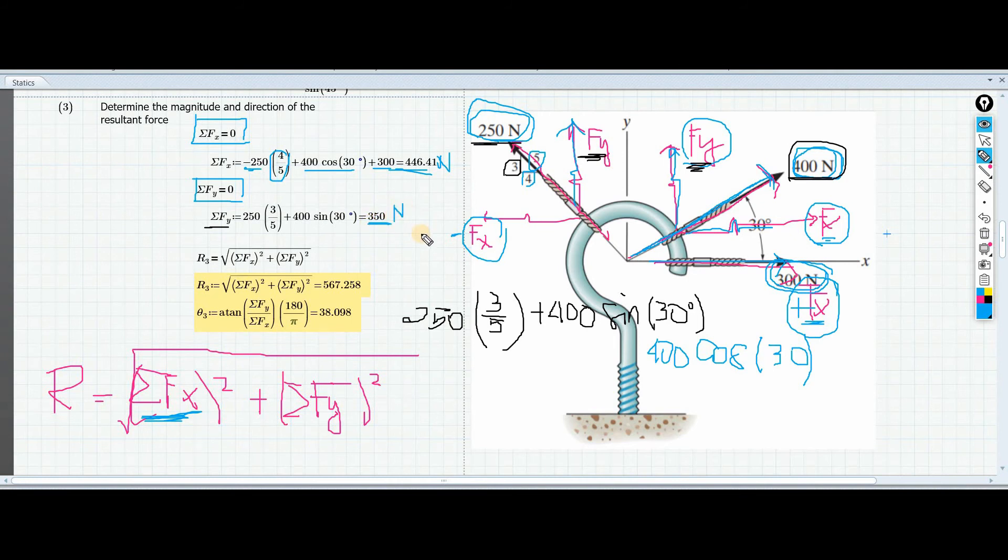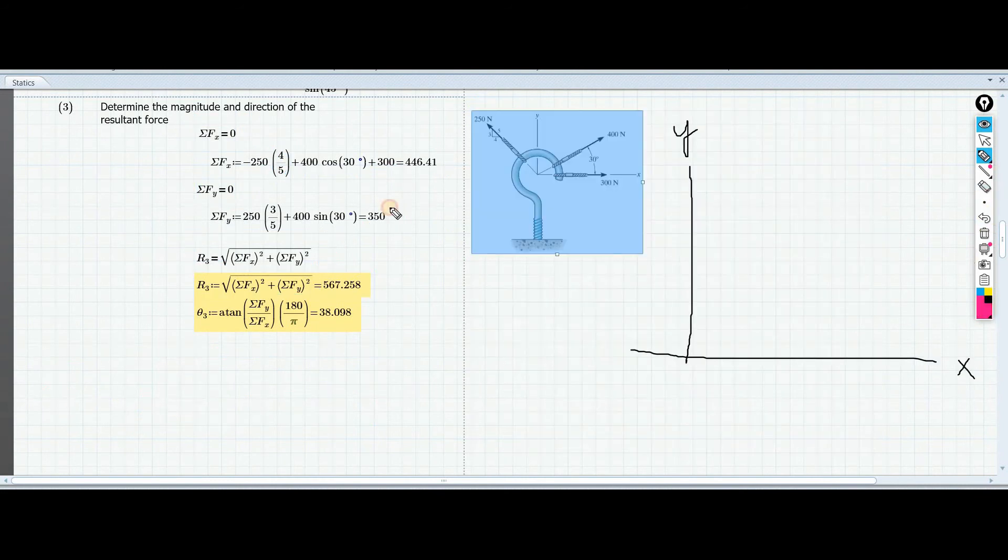So here is our formula for resultant: the summation of forces along x-axis squared plus summation of forces along y-axis squared, then we take the square root. After we input the values, we will have 567.258 Newton. Let's try to redraw everything. We have the value of our summation of forces along x, which is 446.41, and we have the value of our summation of forces along y, which is 350.